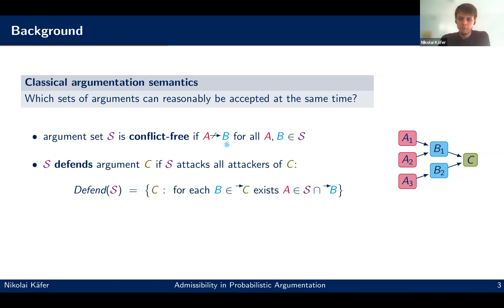And then admissibility is based on the notion of defense. So here, argument C is defended if the attackers here, B1 and B2 are in turn attacked. So A1 or A2 need also to be in the set and A3 needs to be in the set. So we denote by defend S, all the arguments that are defended by the arguments in the set. And then, as you may know, admissibility is just exactly those sets that are conflict-free and that defend all the arguments inside the set. So pretty much it's a self-defending set, if you will.